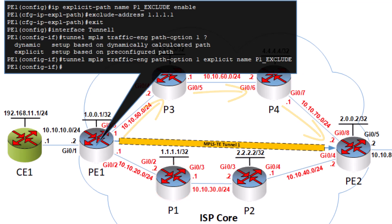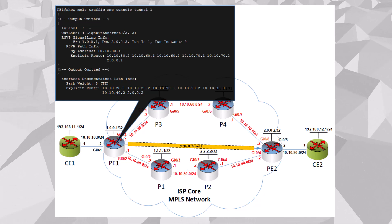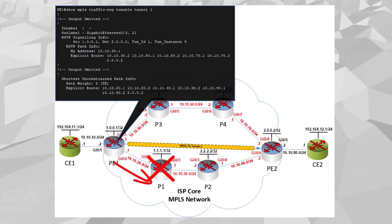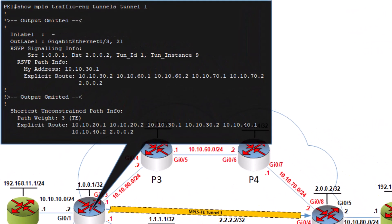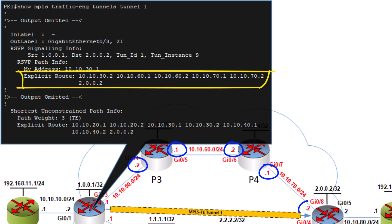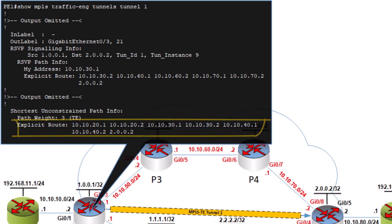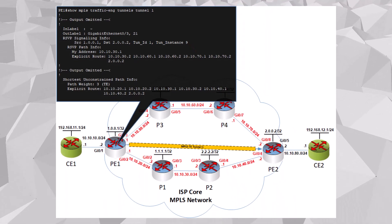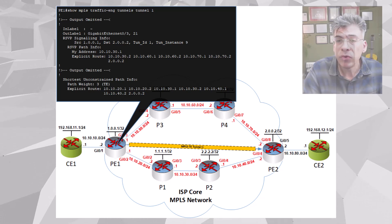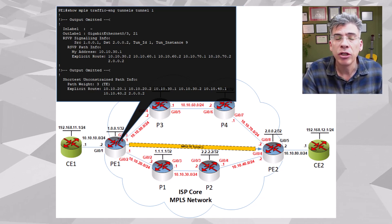Now let's check the path that our tunnel has indeed taken. Here using the RSVP path info, you can see the tunnel no longer goes through this path here because P1 is excluded. We now have an explicit route that goes this way, and this is verified by the IP addresses in our RSVP explicit path list. The interesting thing, however, is that the IGP path that uses the TE metric remains the same. The TE metric hasn't changed, but the tunnel is simply instructed to avoid using this particular router. So we've successfully configured an explicit path to exclude a particular router. Remember, you can issue the same command and instead of a router ID, use the IP address of any interface you may want to avoid.